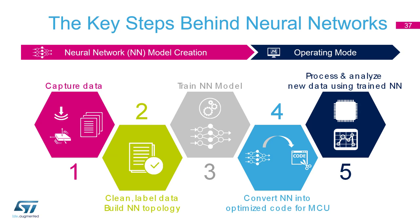Step four is to convert the trained neural network into C code so it can run on a microcontroller. Step five is to process and analyze — checking for discrepancies between the theoretical model and the real deployed model, because conversion may mean results aren't 100% identical to the theoretical model. There is also an optional compression step to fit the model into less memory, after which you verify you are still achieving the desired accuracy.